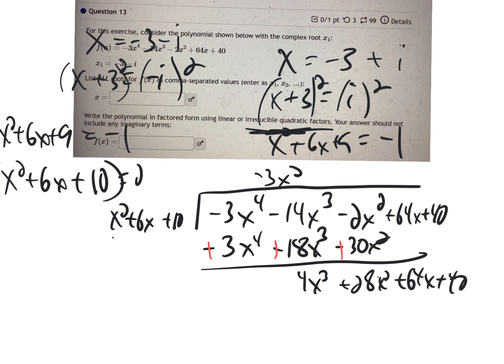So then I ask myself, what times x squared gives me 4x cubed? Well, that'll be 4x. So 4x to the third plus 24x squared plus 40x.